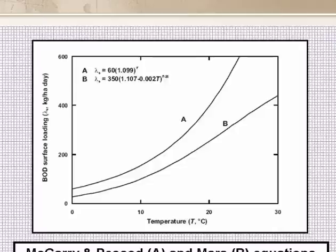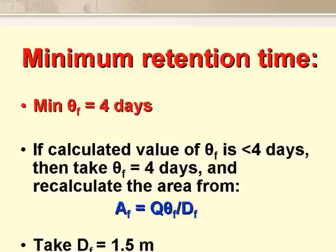This figure shows the McGarry–Pescod equation and the Mara equation, and you can see that there is a sufficient factor of safety in the Mara equation at all design temperatures. The mean hydraulic retention time, defined as V/Q, in facultative ponds should not be less than 4 days. So if its calculated value is less than 4 days, we have to use a value of 4 days and recalculate the area, assuming a depth of 1.5 metres.